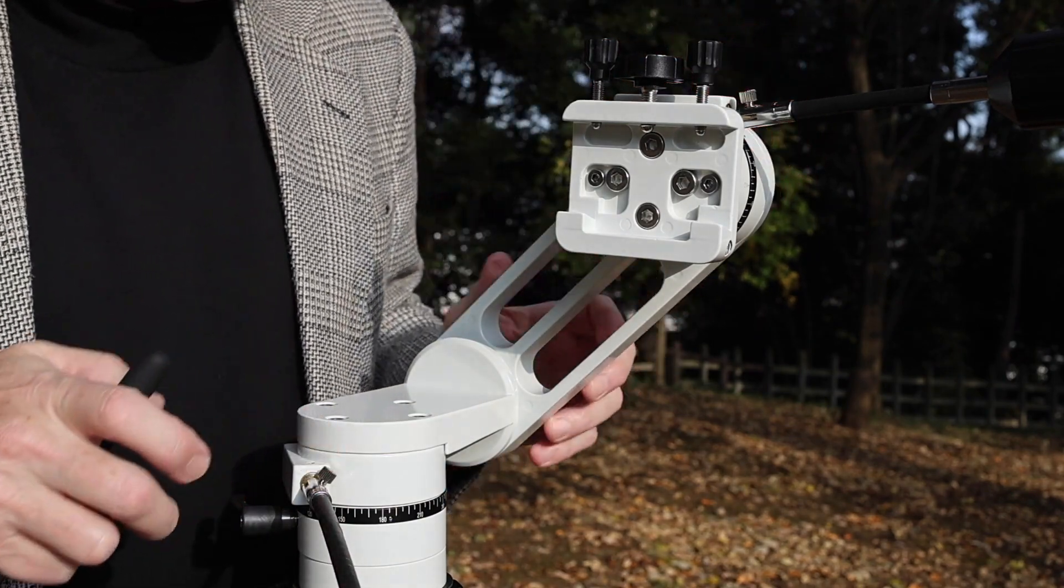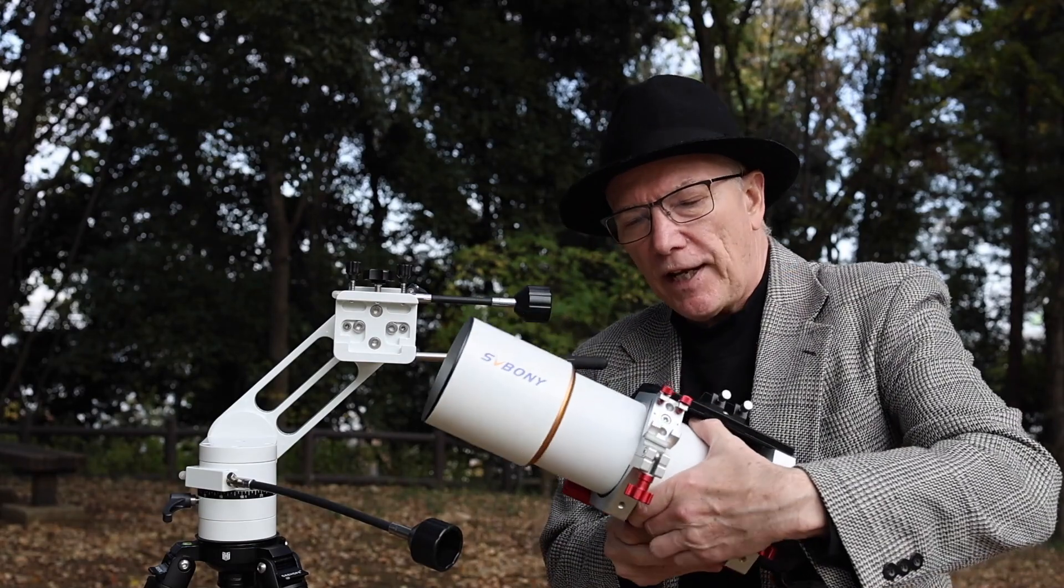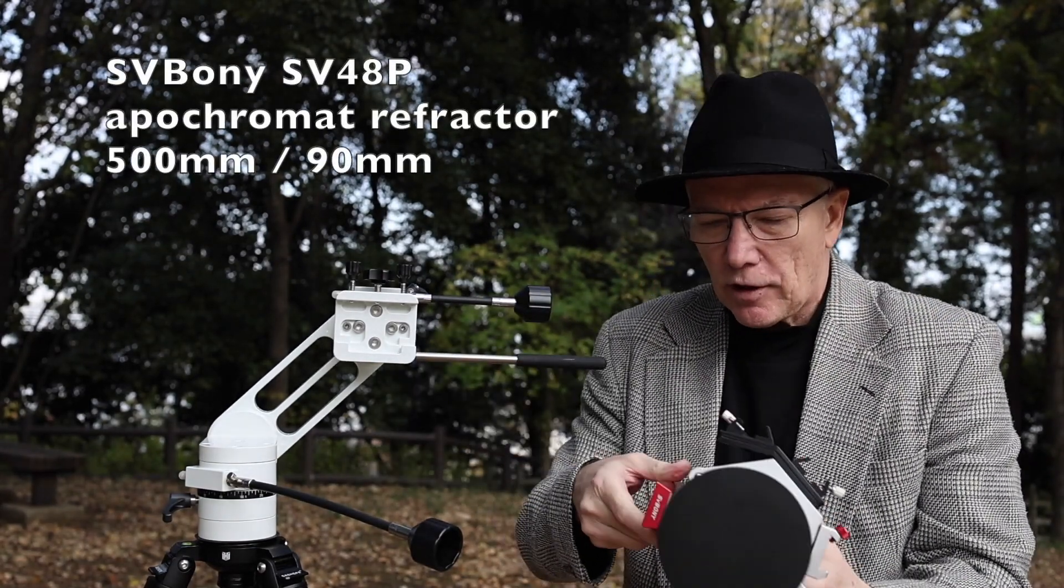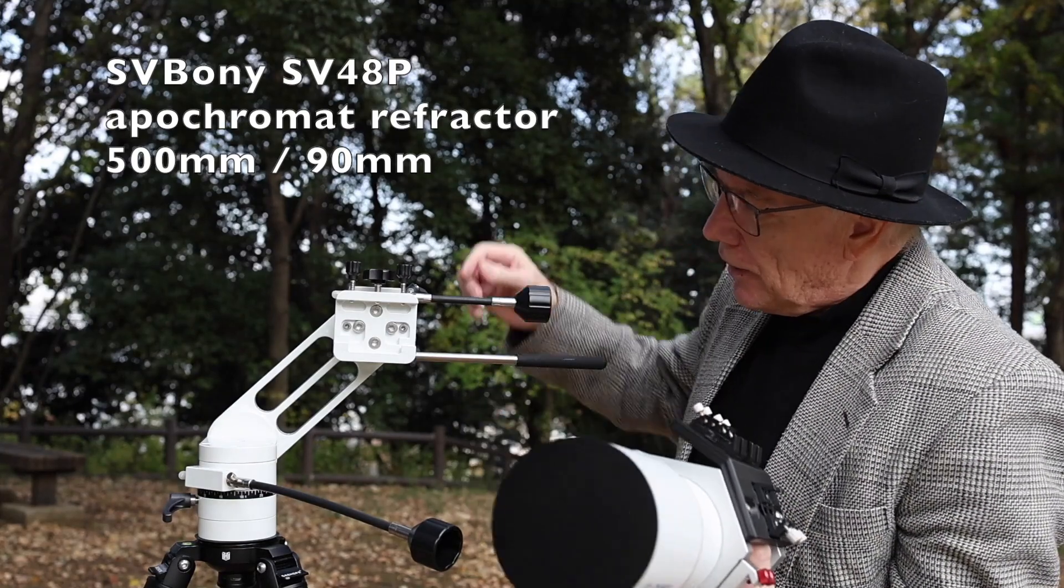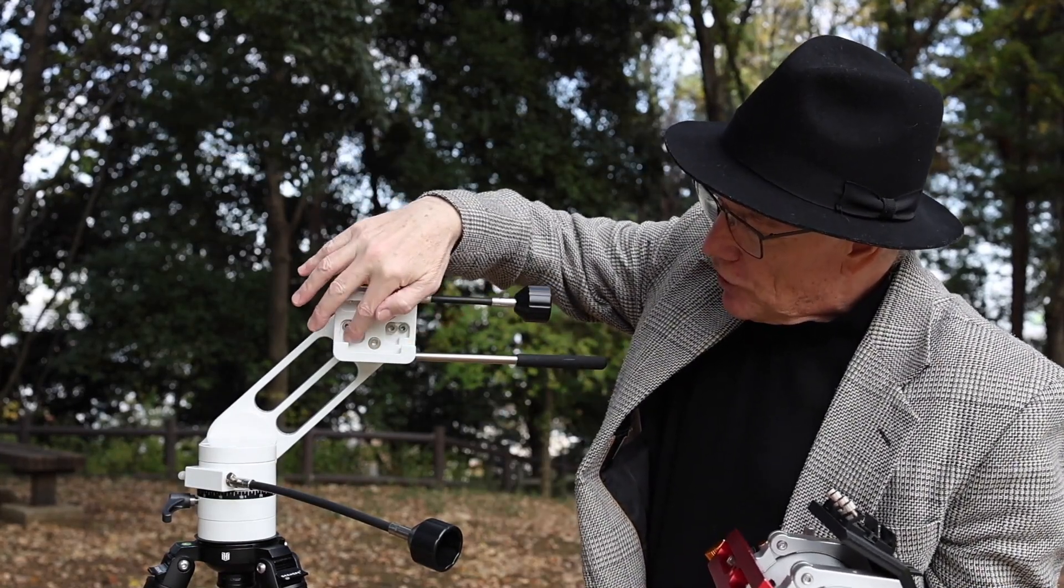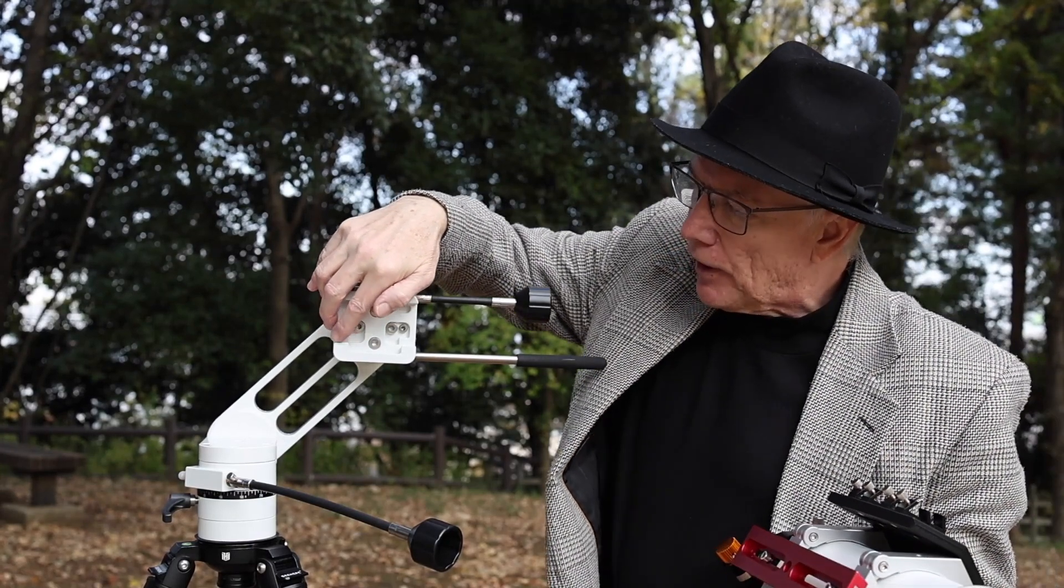So here is my SV 48P telescope from Svbony, and let me show you how to put this together now. This clamp, as I mentioned earlier, is positioned so that the upwardly slanted area of the clamp head here is on the bottom.